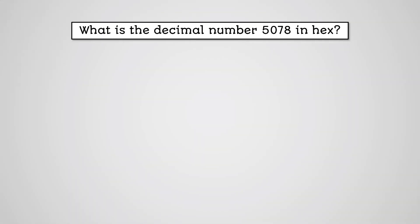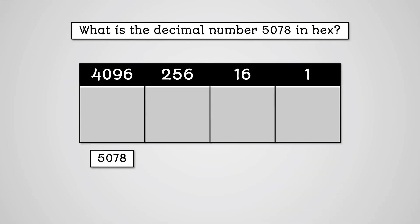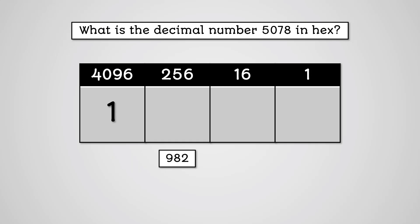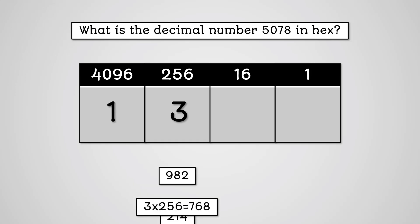Let's try one last number — a really big one this time. Let's try 5078. Will 4096 fit into 5078? Yes — how many times? 1. So we put 1 in the 4096 column. 5078 minus 4096 equals 982. Will 256 fit into 982? Yes — how many times? 3. So we put 3 in the 256 column. 3 times 256 is 768, so we take 768 away from 982. 982 minus 768 equals 214.